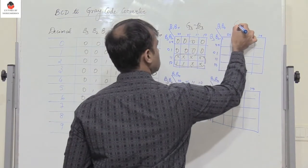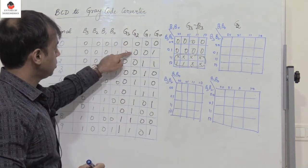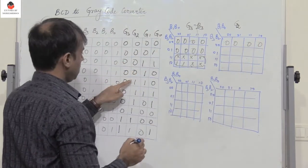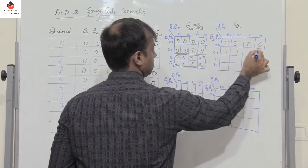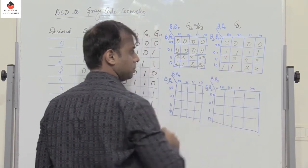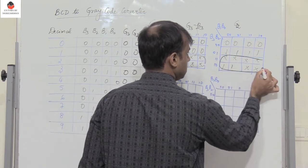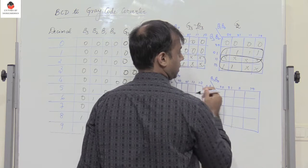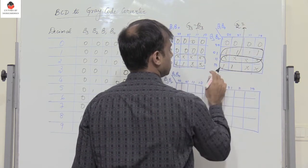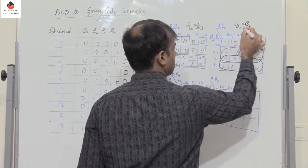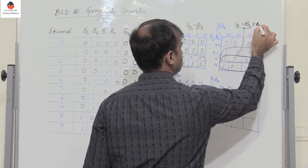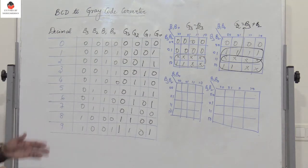Next, let's find the simplified expression for G2. The K-map has four 0s followed by all 1s — that is 1 1 — and don't cares for the remaining. Combining these 8 cells and these 8 cells: when combining the first group, B3 appears in complementary form giving B2; for the other group we get B3. So the expression for G2 is B3 OR B2.